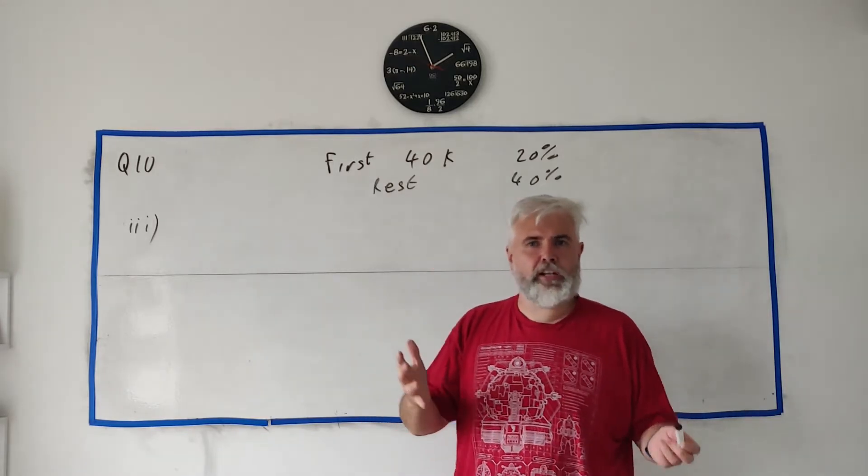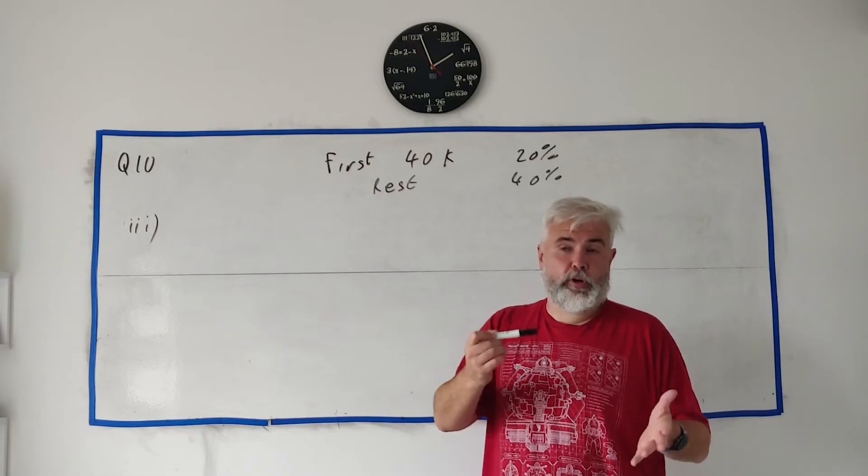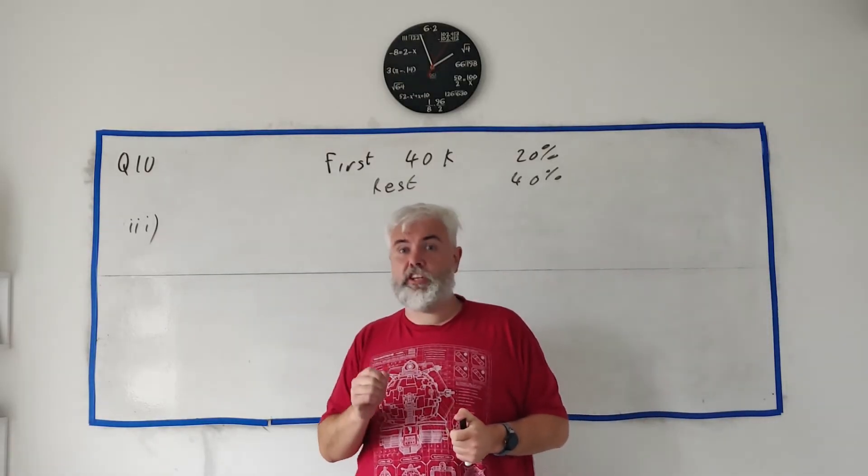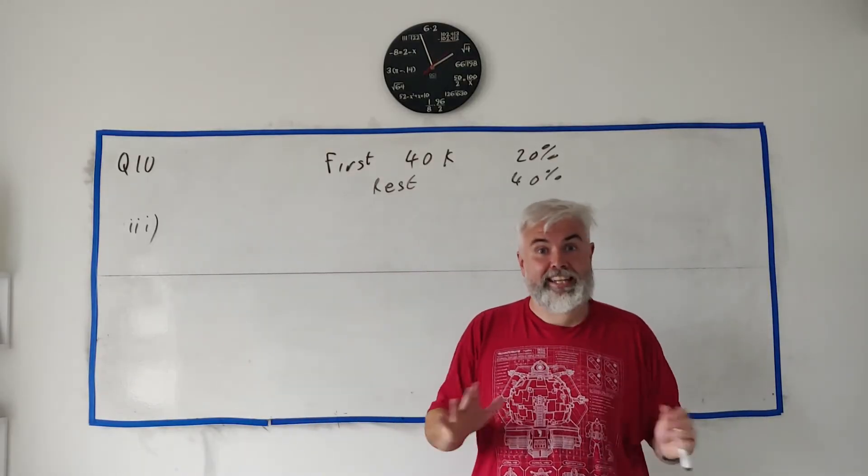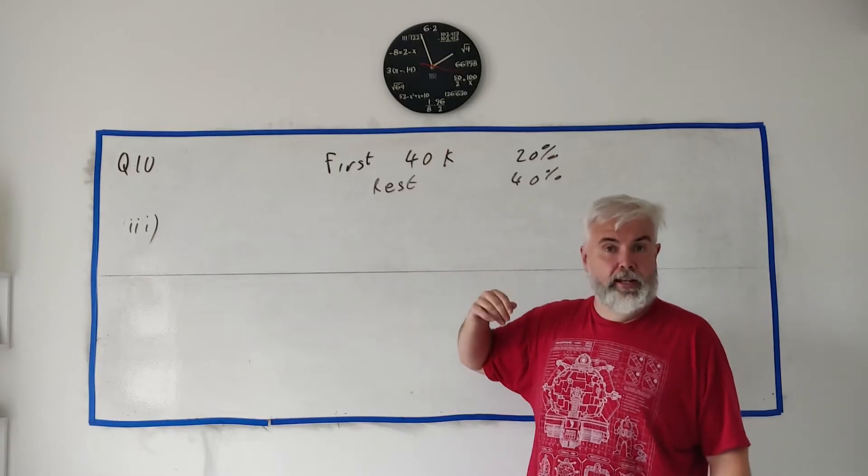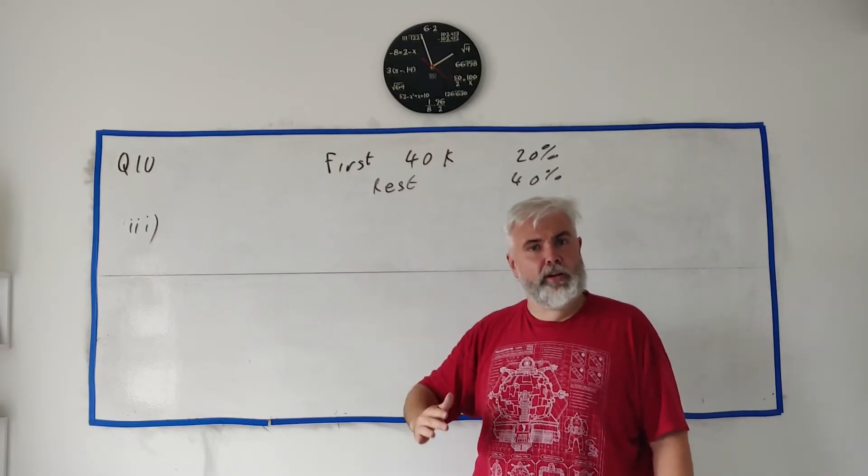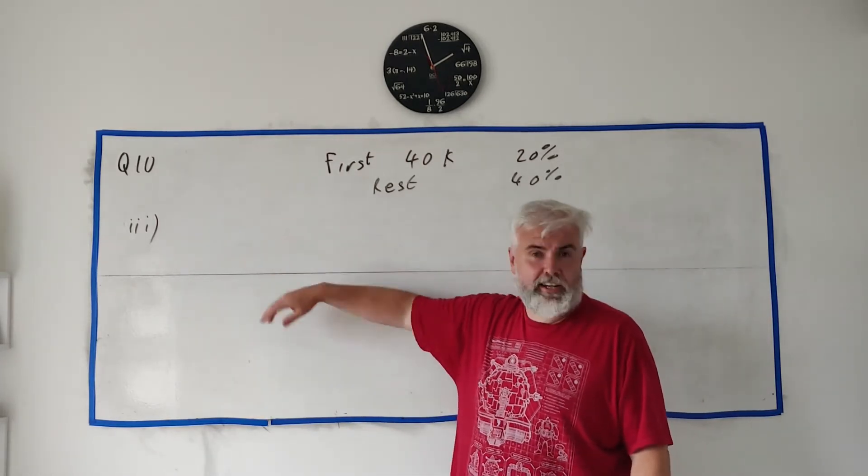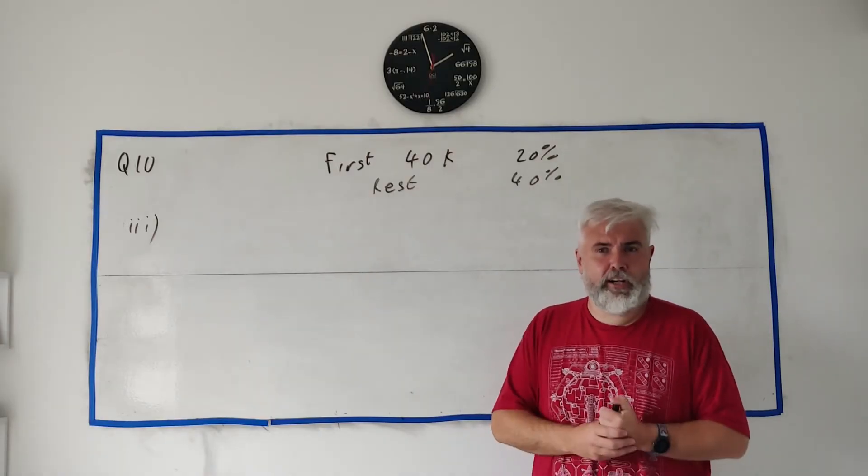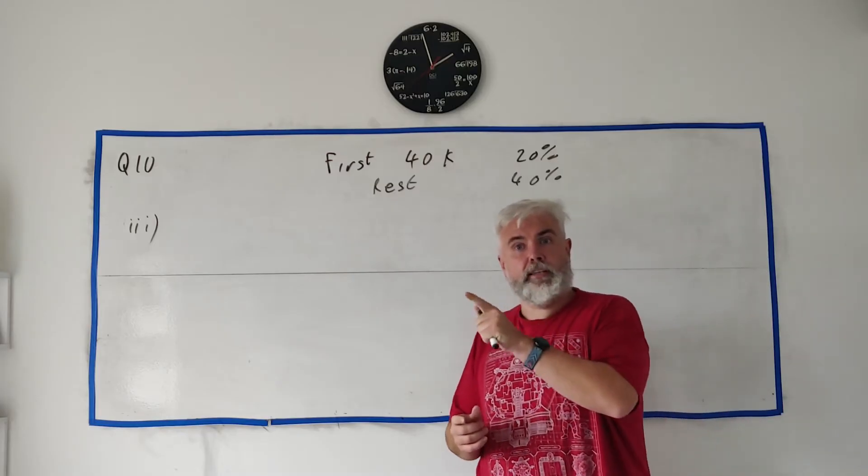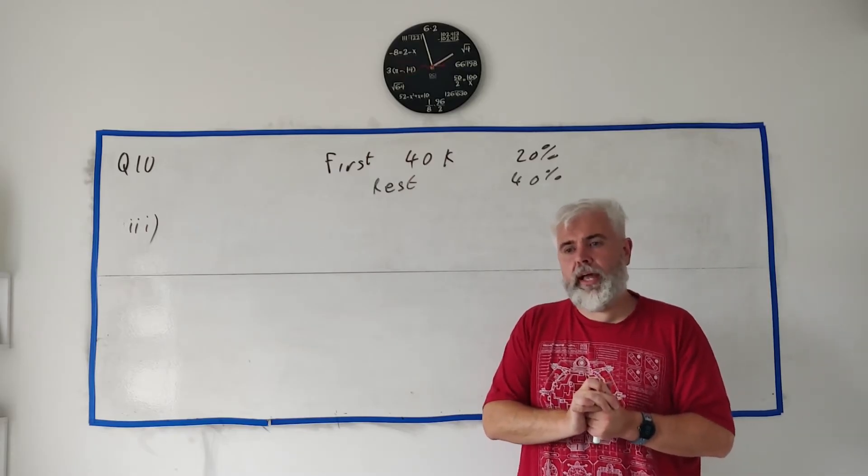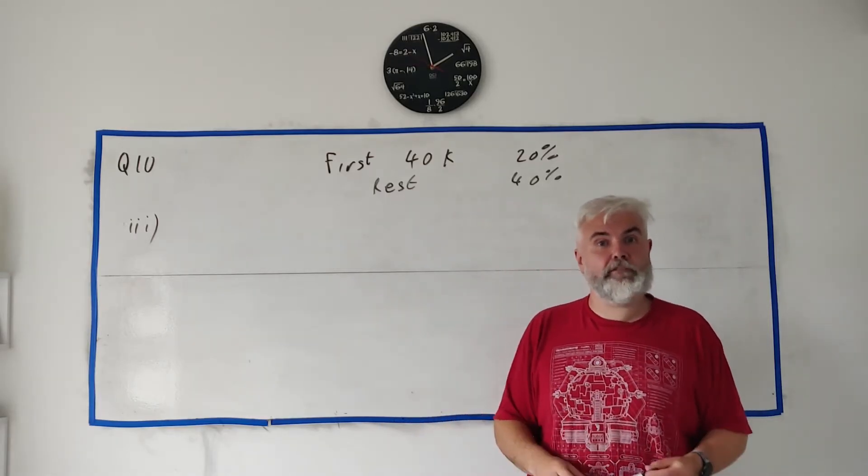In part three, they remind you that the personal tax credit for an employee in Ireland is €3,550, the number we used for the previous examples. They're asking you to find the greatest amount of income an employee can earn before they have to pay any tax. How much money can they earn before they pay tax? We've seen Olivia earned €34,000 and paid tax. Caroline earned €50,000 and definitely paid tax.